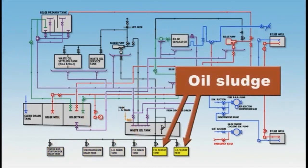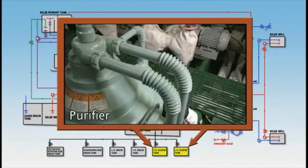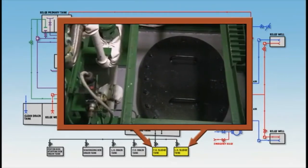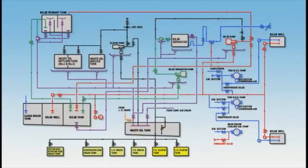Oil sludge is foreign matter other than oil from the fuel oil and lubricating oil purifiers. Heavy fuel oil for marine engines is used only after impurities such as water and carbonic solids have been removed with a purifier. These impurities can account for around 1% of the fuel oil consumed, meaning a ship consuming 100 tonnes of fuel oil every day can generate as much as 1 tonne of foreign matter. Oily drain and sludge are also known as oily bilge, and using a sludge pump, they are transferred from the sludge tank and oily drain tank and collected in the waste oil tank.